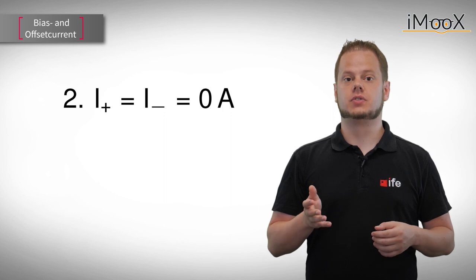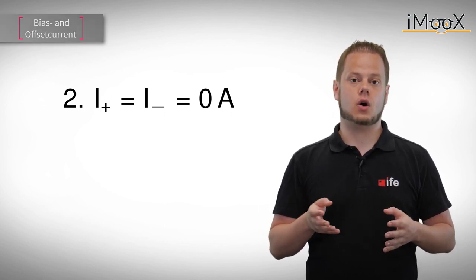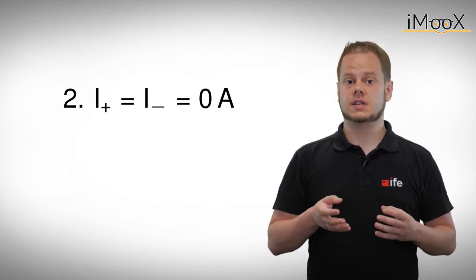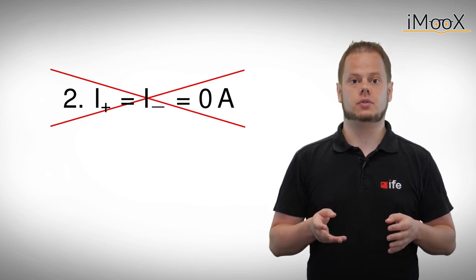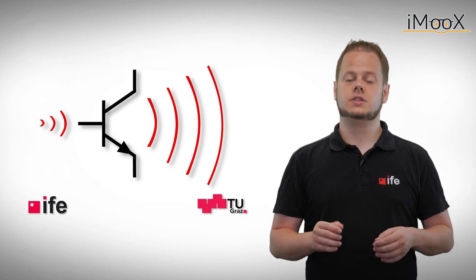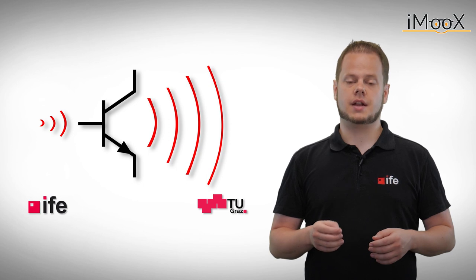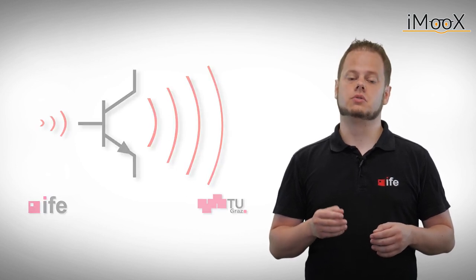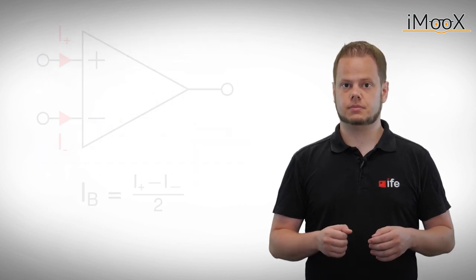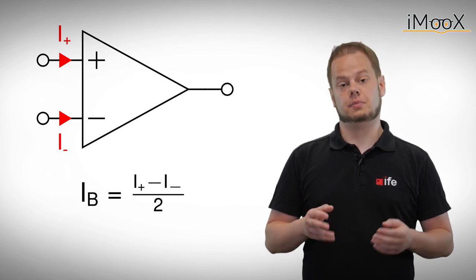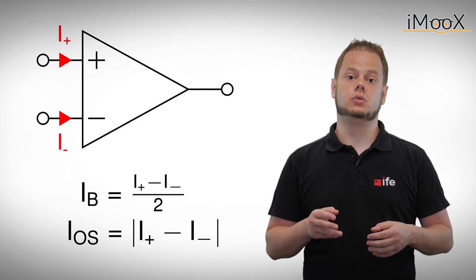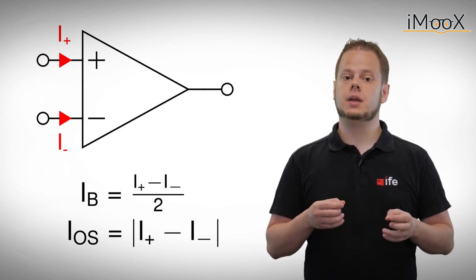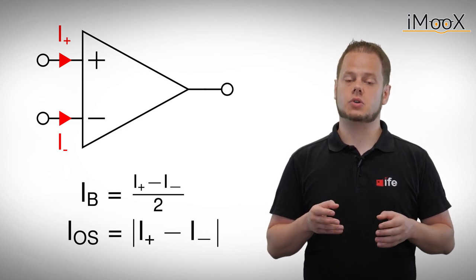Further non-idealities are the currents flowing in the inverting and non-inverting input. Until now, we assumed that no current is flowing into either input. But once we consider a real operational amplifier, this assumption no longer holds true and currents are flowing into both inputs. Instead of providing the currents directly, the bias current IB and offset current IOS can be found in the datasheets. Bias and offset current share some similarities with the common mode and differential mode voltages discussed in a previous video. The bias current gives the mean current flowing into and out of both inputs, while the offset current is the difference between the two input currents. This means that half of the offset current flows into one input and out of the other one.